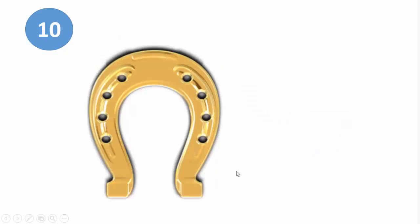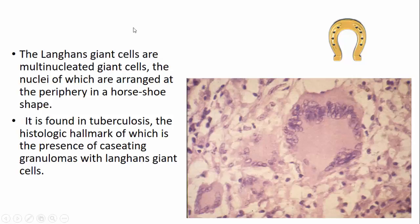The last one is the horseshoe. Langhans giant cells, as you know, are multi-nucleated giant cells found in tuberculosis. The nuclei are arranged at the periphery in a horseshoe shape, which is why it is classically referred to as the horseshoe-shaped arrangement of nuclei in a Langhans giant cell. The presence of caseating granulomas with Langhans giant cells almost always suggests tuberculosis.